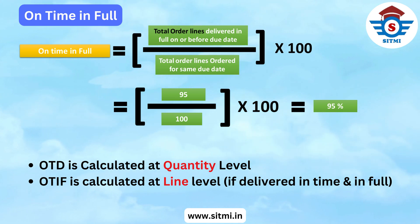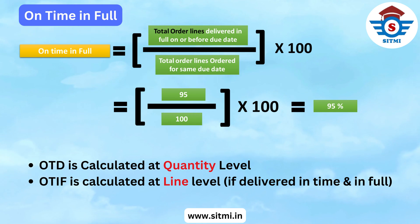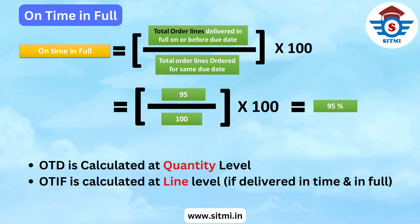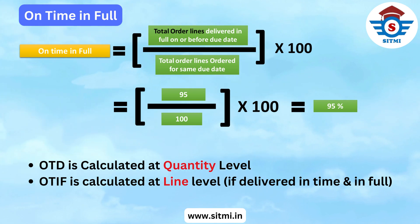For example, if a single order line has a quantity of 100 but we could only deliver 99 for that particular order line, then OTIF would be 0%, but On Time Delivery would be 99%. That is the major difference between On Time Delivery and On Time In Full. We will also discuss this concept again in the Excel calculations with more examples for a better understanding.